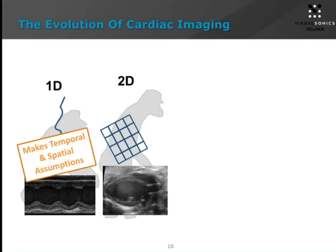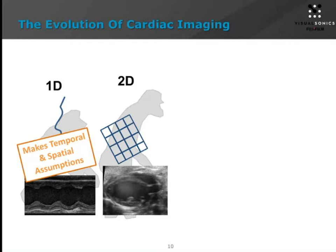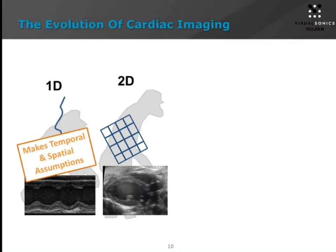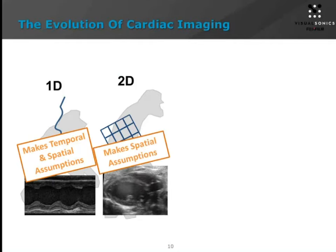Following on from that there's 2D imaging. We have a nice example here of a long axis left ventricle of a mouse's heart in 2D. The measurements and calculations for function available in 2D are widely accepted based on the American Society of Echocardiography and the European Societies of Echocardiography consensus papers on measurements of planar dimensions and calculations of function. It's quite powerful and we've had the ability to do this on our systems for some time, but there are still some spatial assumptions built into these types of measurements.